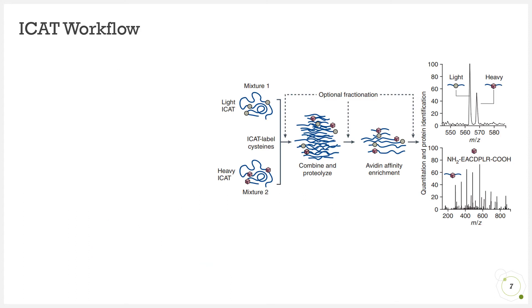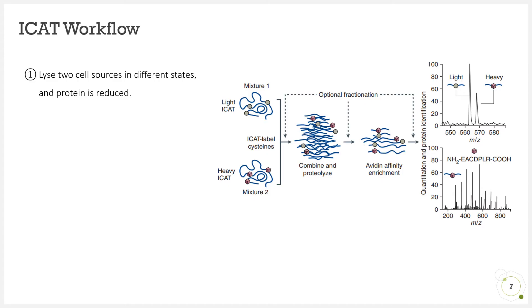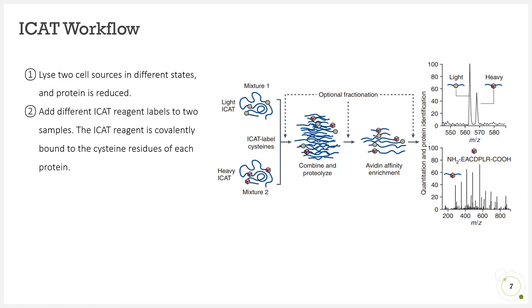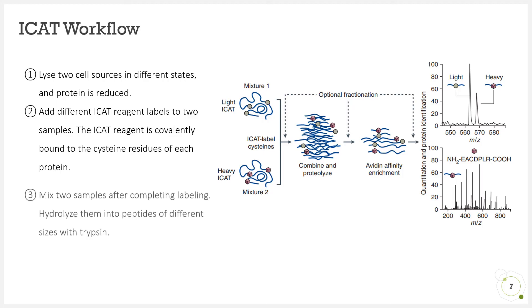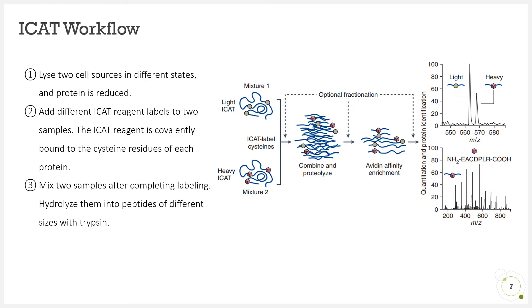Now let's take a look at the actual operation process. In the first step, the two sources of cells are lysed in different states and the protein is reduced. In the second step, add different ICAT reagent labels to the two samples — the ICAT reagent is covalently bound to the cysteine residues of each protein. Third, mix the two samples after labeling is complete, and hydrolyze them into peptides of different sizes with trypsin.